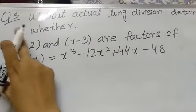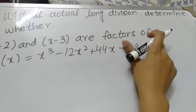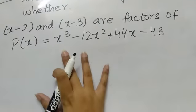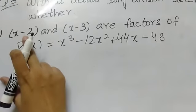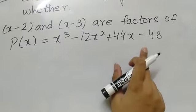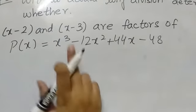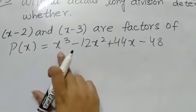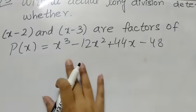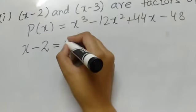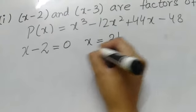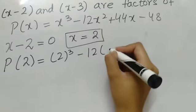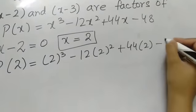Now we are going to solve question number 3: without actual long division, determine whether x minus 2 and x minus 3 are factors of this polynomial. If when putting x minus 2 equal to 0 the remainder is 0, then x minus 2 is a factor. So x minus 2 equals 0 gives x equals 2. We put p of 2 equal to 2 cubed minus 12 times 2 squared plus 44 times 2 minus 48.